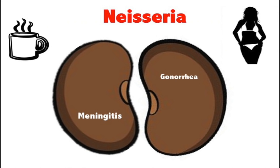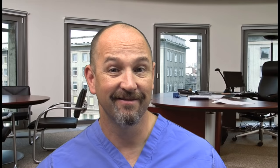Neisseria is a gram-negative diplococci. Gram-negative diplococci is Neisseria; gram-positive diplococci is Strep pneumoniae. Gram-negative diplococci causes two diseases: meningitis and gonorrhea. For your boards, if they say gonococcal urethritis, it means gram-negative diplococci in the urethral smear. If a gram stain is done but there's nothing there, they call it non-gonococcal urethritis — that's a code word for chlamydia.